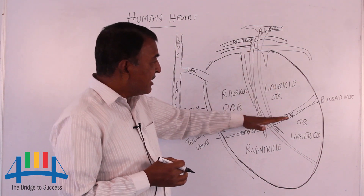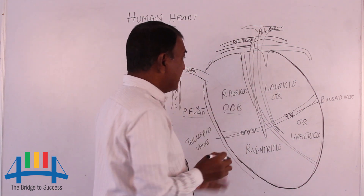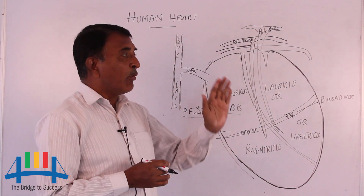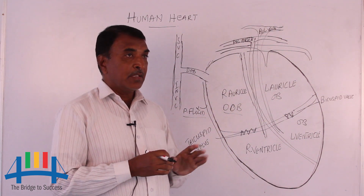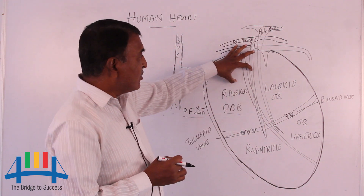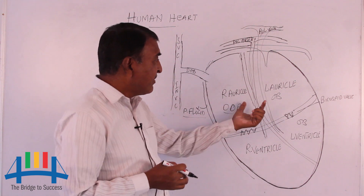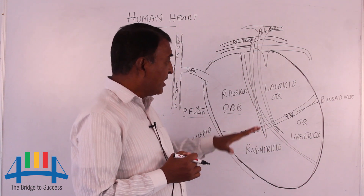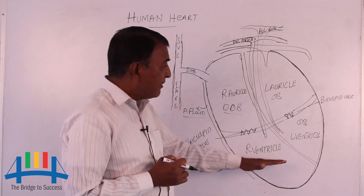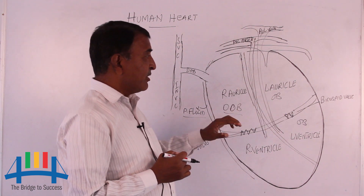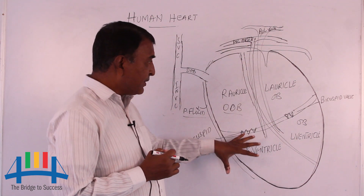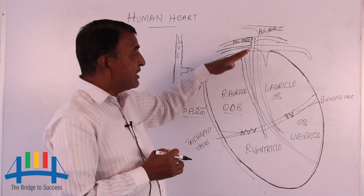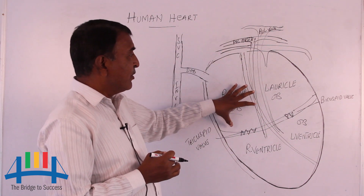The heart chambers are divided by wall-like structures called septa. The partition between the two auricles is called the auricular septum. The wall-like structure between the two ventricles is called the ventricular septum. The wall-like structure between an auricle and a ventricle is called the atrioventricular septum. This is the internal structure of the heart — by looking at the groove-like structures from outside, we can identify that the heart is divided into four chambers.